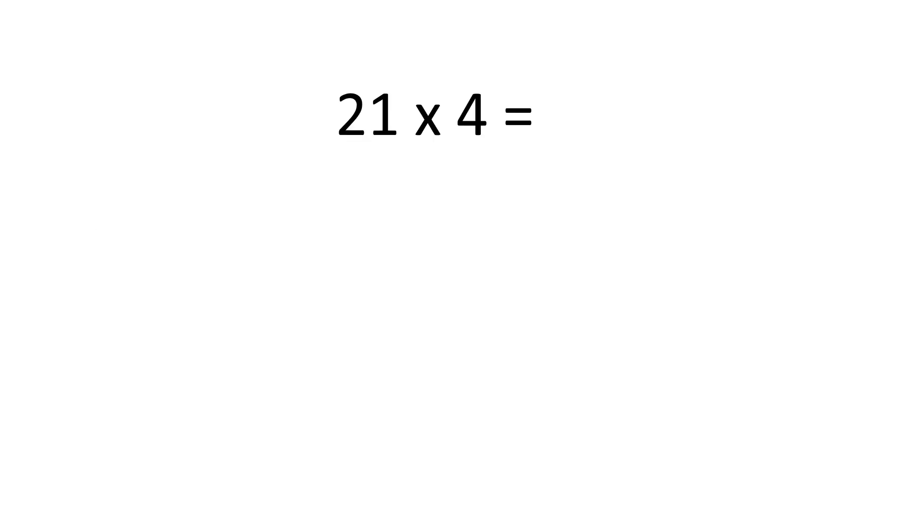In our first example, we want to find the answer to 21 multiplied by 4. First, we partition the two-digit number into tens and ones.